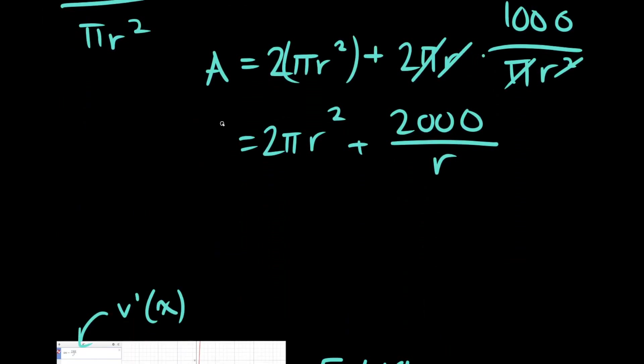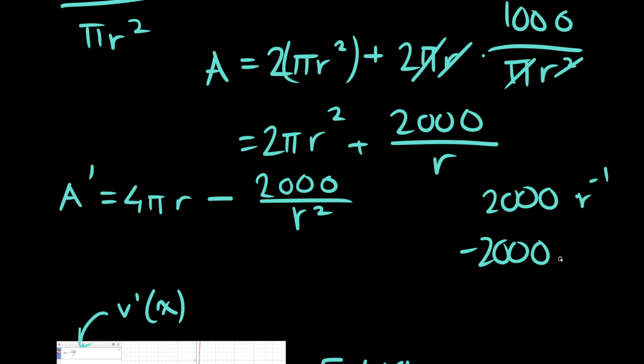The way I did this was I just used the power rule to get A prime. Let's use the power rule because our variable is r. This is going to be 4 pi r minus 2,000 over r squared. If you treat this as 2,000 times r to the minus 1, you'll get that minus 2,000 times r to the minus 2 is your derivative.